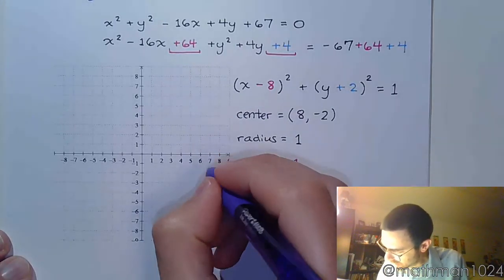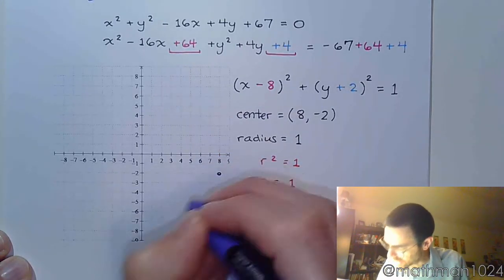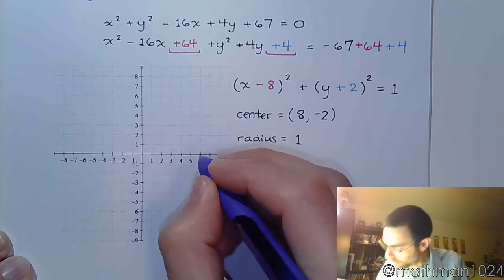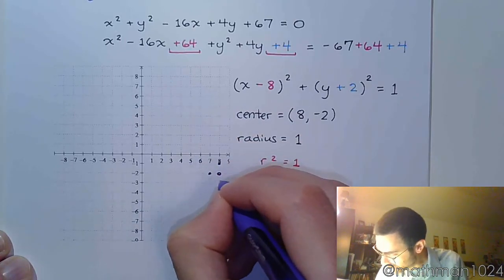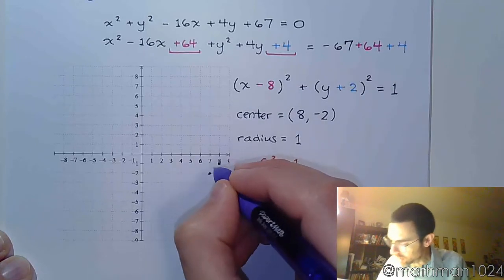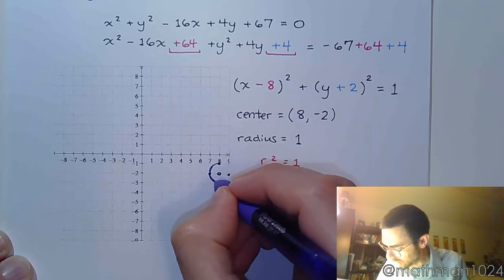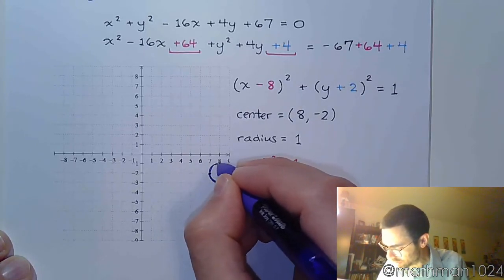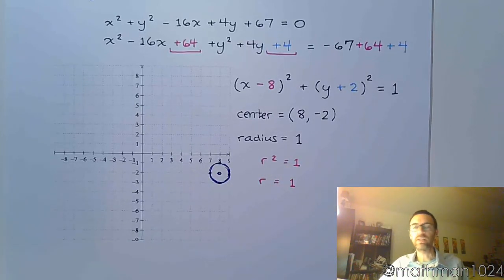So my center is 8, negative 2. With a radius of 1, so I'm just going to go up, down, left, and right one unit. And there's my circle. Just a little guy like that.